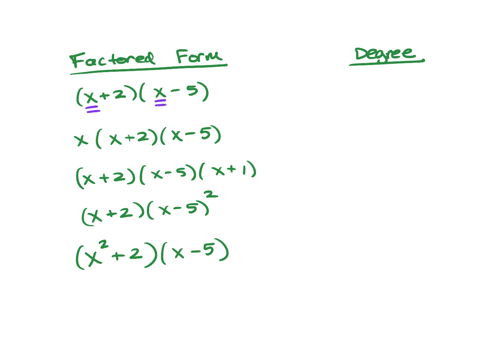Right here, you have x times x, which is going to give you x squared, which is degree 2. If you will notice, you also have 2 factors. This is factored form, and there are 1, 2 factors, giving you degree 2.